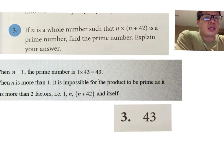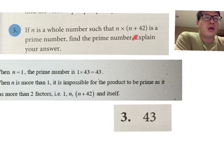Okay, so for this question: if n is a whole number such that n multiplied by n plus 42 is a prime number, we need to find the prime number.